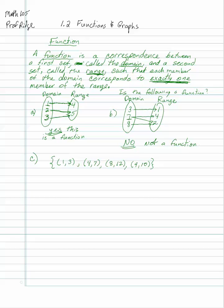Another way we can represent a function is a set of ordered pairs. The domain is the set of first elements — the x's. So the domain is {1, 4, 8, 9} — the first number in each ordered pair. The range is the set of second elements, the y-coordinates: {3, 7, 12, 10}. Each member of the domain — 1, 4, 8, 9 — got assigned exactly one member of the range. So yes, that's a function.